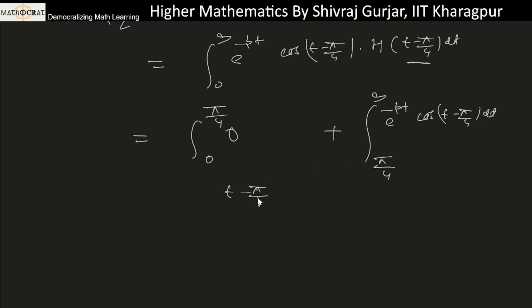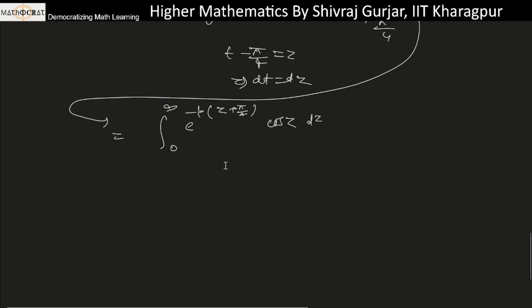For t - π/4, we may put z, so dt equals dz. This will be from 0 to infinity of e^(-p(z + π/4)) cos(z) dz. We can take e^(-p π/4) outside because it's constant, leaving the integral from 0 to infinity of e^(-pz) cos(z) dz. This is nothing but the Laplace of cos(z) times e^(-π/4 p), which is p/(p² + 1).